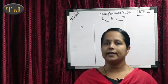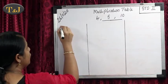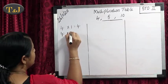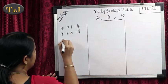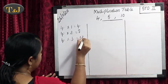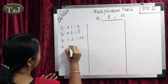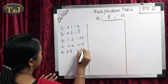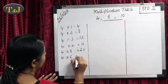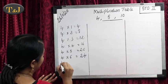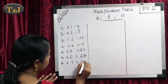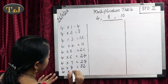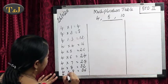now we are going to start our first table, that is the multiplication table of 4. 4 times 1 is 4, 4 times 2 is 8, 4 times 3 is 12, 4 times 4 is 16, 4 times 5 is 20, 4 times 6 is 24, 4 times 7 is 28, 4 times 8 is 32, 4 times 9 is 36, 4 times 10 is 40.